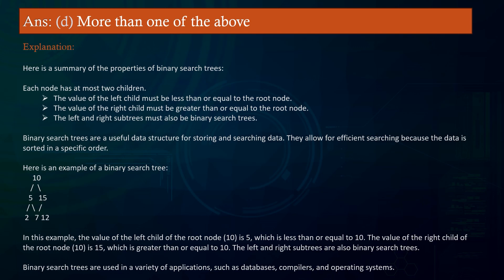Binary search trees are a useful data structure for storing and searching data, allowing efficient searching because data is sorted in a specific order. For example, with a root node of 10, the left child is 5 (less than or equal to 10) and the right child is 15 (greater than or equal to 10). The left and right subtrees are also binary search trees. BSTs are used in databases, compilers, and operating systems.